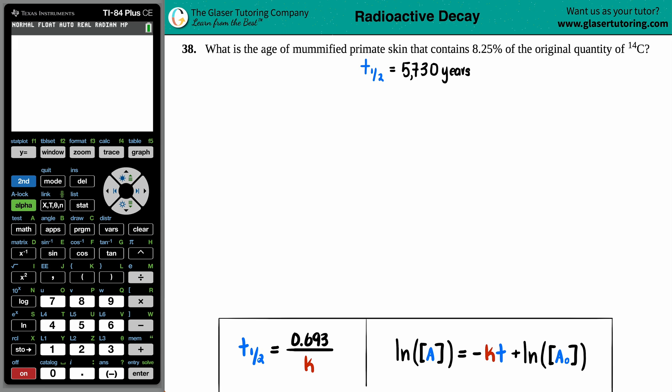Number 38, what is the age of mummified primate skin that contains 8.25% of the original quantity of carbon-14? Okay, so we got some old primate skin here. We got some mummified primate skin, and we want to know what's the age of it.